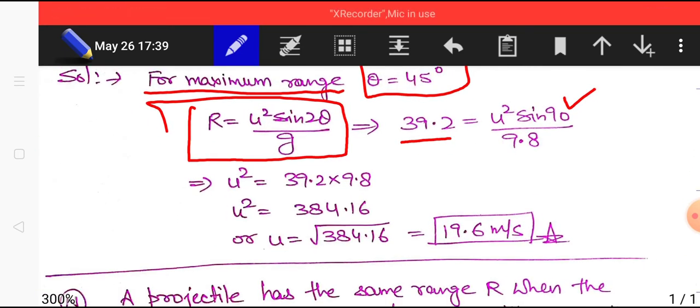So we can easily calculate u equals 19.6 meter per second. Hence minimum 19.6 meter per second velocity is required for covering a range of 39.2 meter.